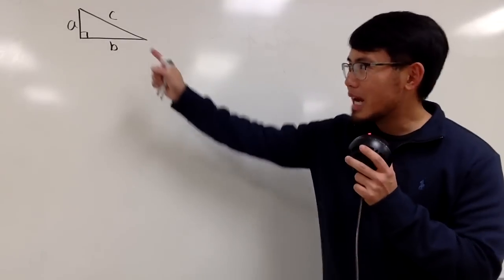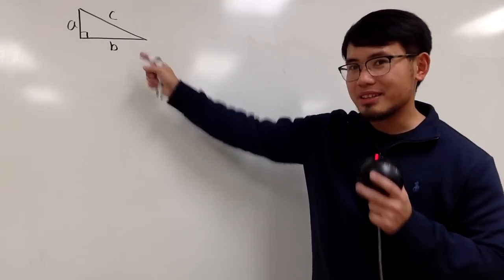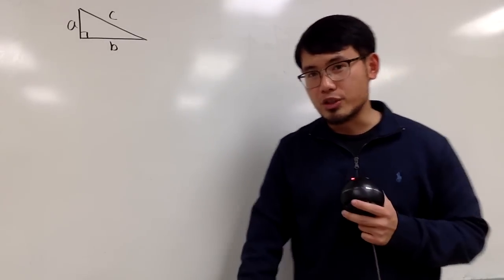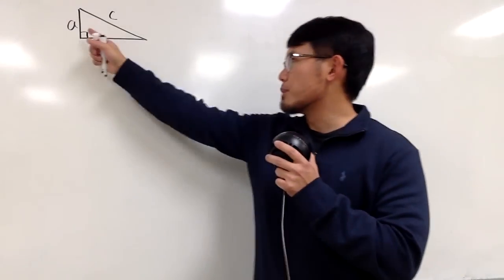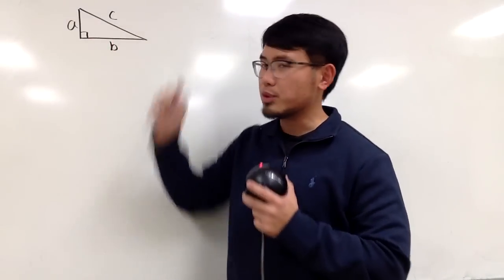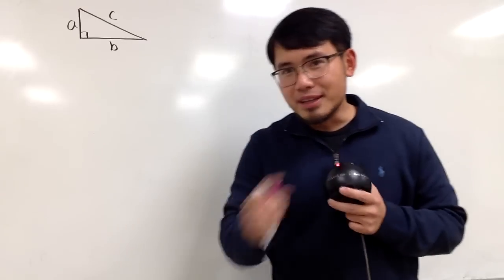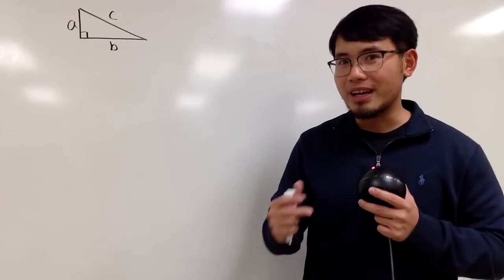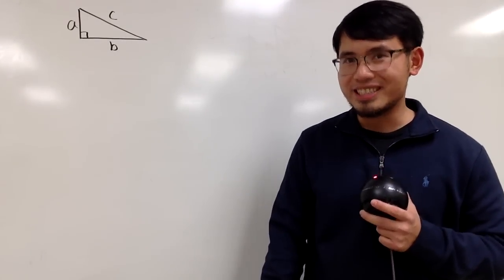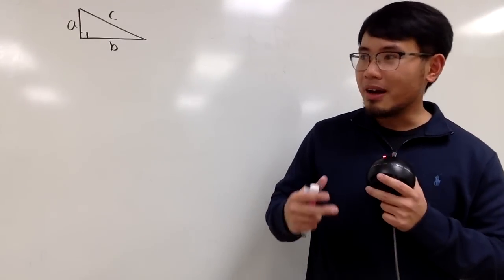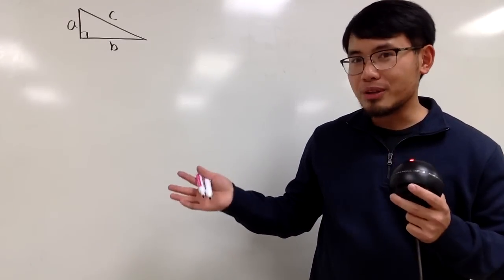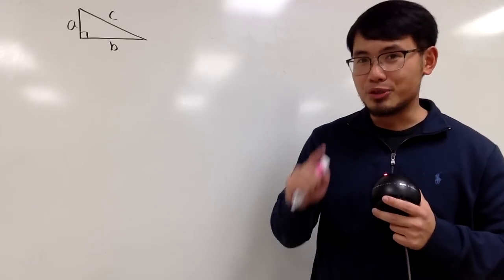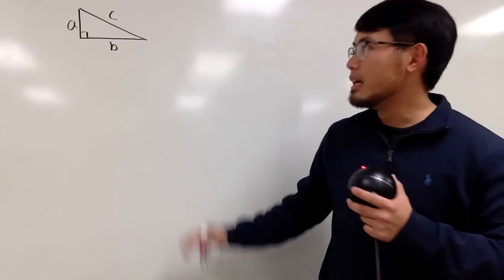As you all know, when we have a red triangle like this, we can talk about the famous Pythagorean theorem, namely a squared plus b squared equals c squared. And that's what we are going to do in this video. I will show you guys the proof that I like the most. Although there are a lot of proofs out there, at least hundreds of them, I will just show you guys the one I like the most.